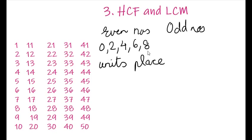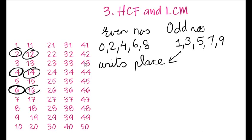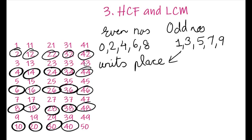The numbers which have 1, 3, 5, 7, or 9 at the units place are called as odd numbers. Now let us circle the even numbers in this list. All the circled numbers are called as even numbers, and the numbers which are not circled are called odd numbers.